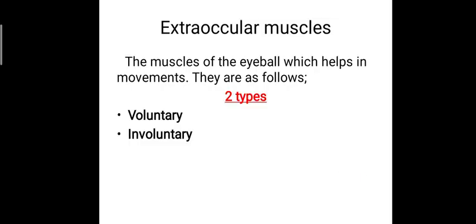The extraocular muscles are the muscles of the eyeball which help in the movements of the eyeball. They are generally categorized into two types: voluntary and involuntary muscles. The voluntary muscles work according to our wish, while the involuntary muscles are carried out by involuntary mechanisms.